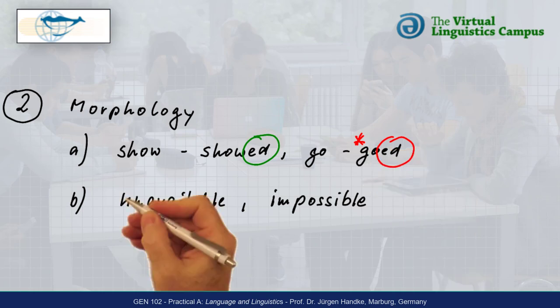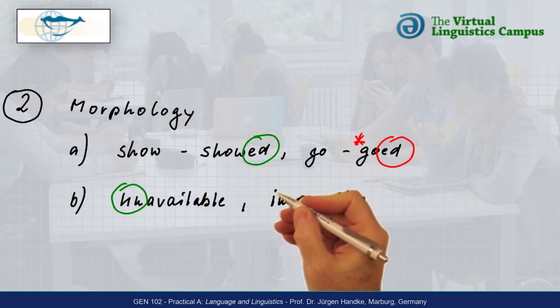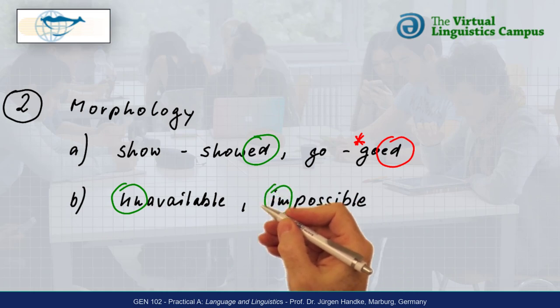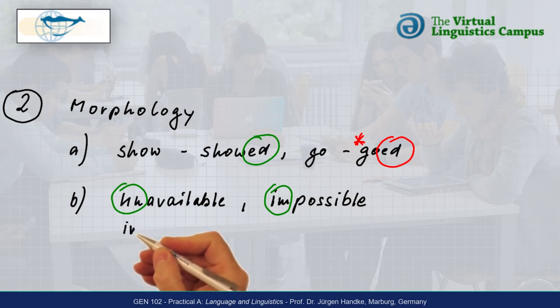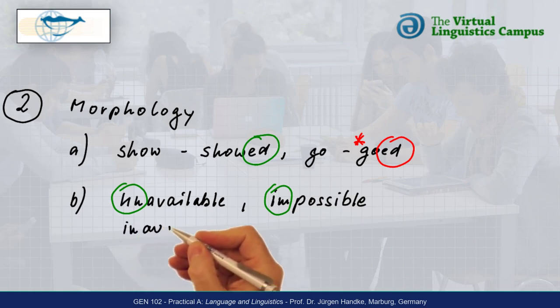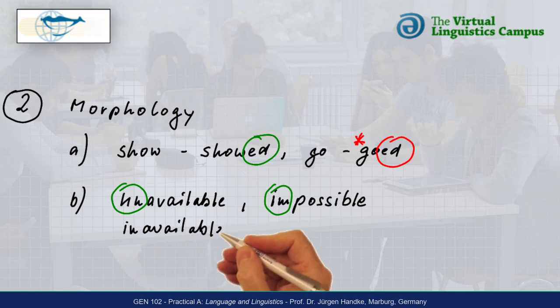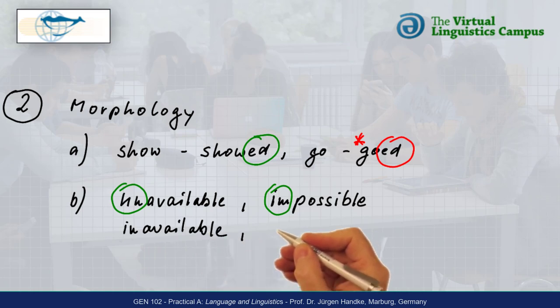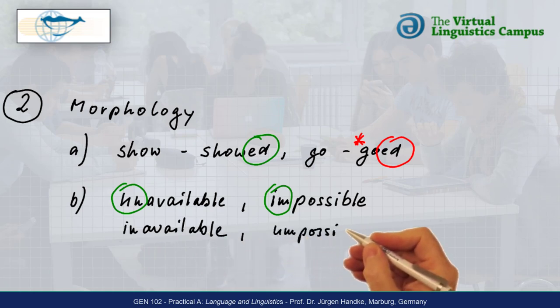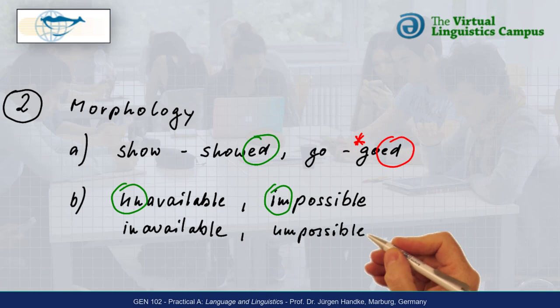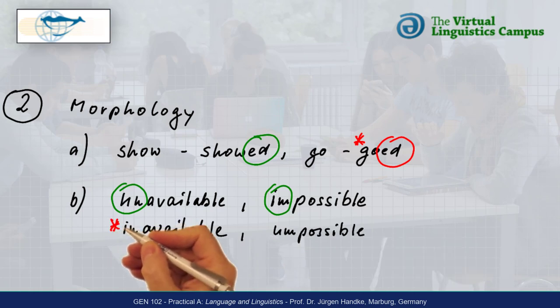In the pairs unavailable and impossible, we can see that the prefix un- or in-, respectively, cannot be used the other way around. Inavailable and unpossible are words that do not exist in present-day English.